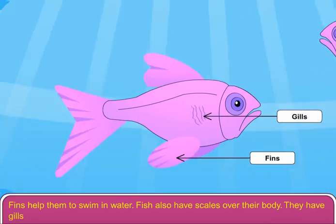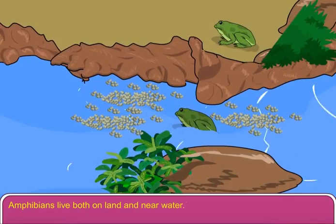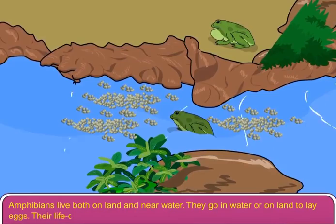Amphibians live both on land and near water. They go in water or on land to lay eggs. Their life cycle is not complete without water. They have thin and moist skin.